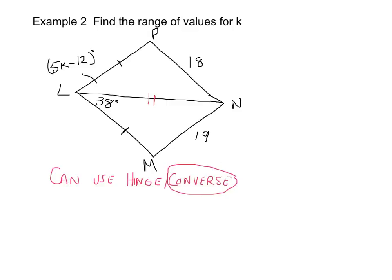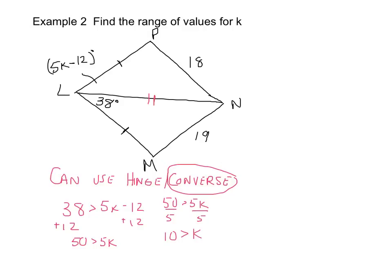If we were told about the angles we would use the hinge theorem, but here we use the converse. The bigger side, which is 19, will have the bigger included angle. So 38 will be greater than 5K minus 12. We add 12 to both sides: 50 is greater than 5K. Dividing by 5, we get 10 is greater than K, or rewritten, K is less than 10.